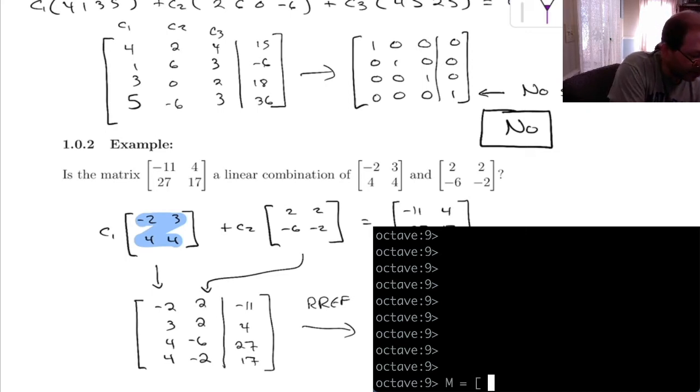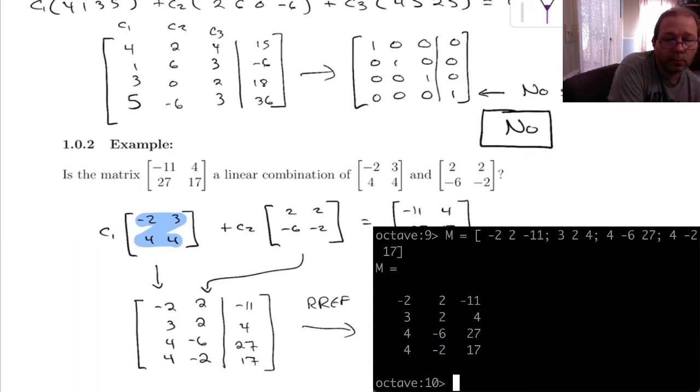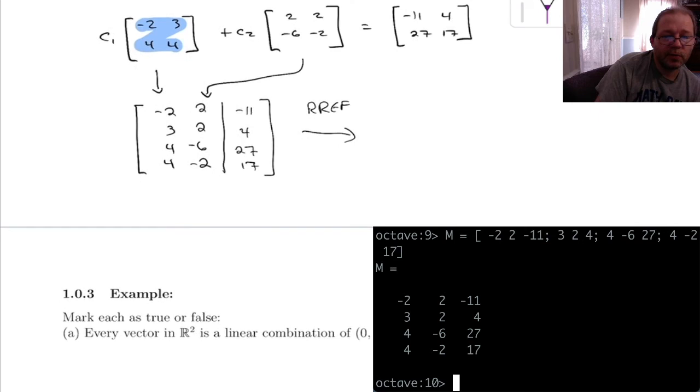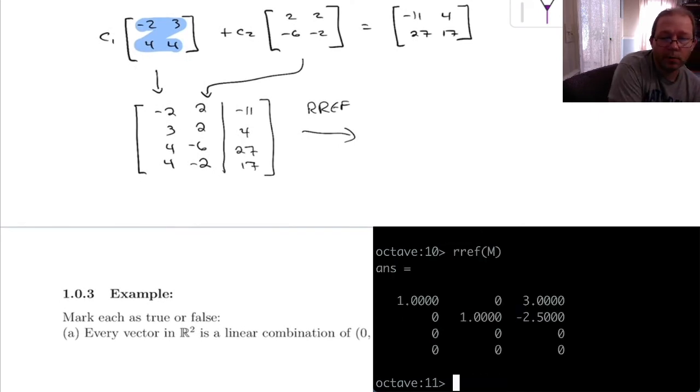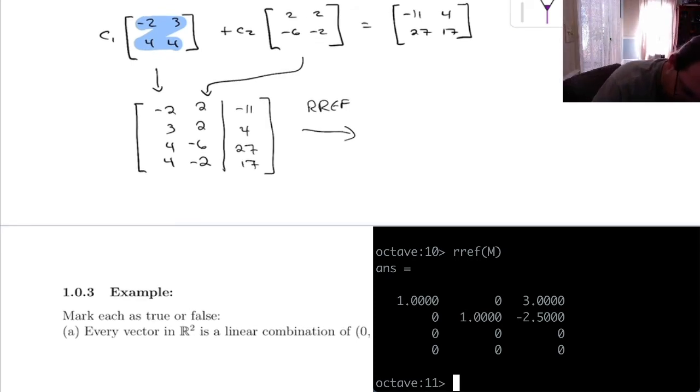We've got -2, 2, -11, then 3, 2, 4, then 4, -6, 27, then 4, -2, 17. I always do a quick double check to make sure I typed it in correctly. And now let's row reduce this. Okay, it gives me some decimals. So let's copy that down over here. It gives me 1, 0, 3, then 0, 1, -2.5, and then two rows of nothing but zeros.